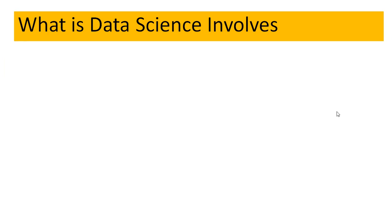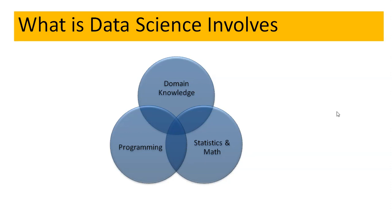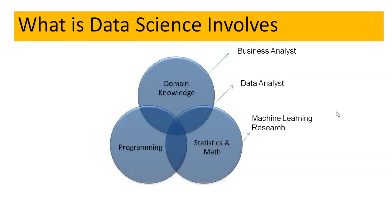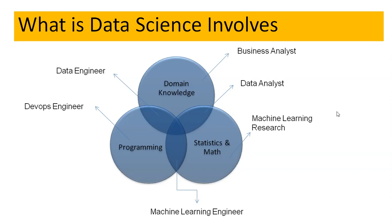Data science involves domain knowledge, statistics and math, and programming. The roles in data science include: business analyst, who has high domain knowledge, understands and collects requirements and documents them; data analyst, who has domain knowledge and skills in stats and math, performing data pre-processing, preparation, analysis using statistical methods, and visualization; those with strong stats and math are involved in ML research; ML engineer, who has stats, math, and programming skills; dev apps engineer with strong programming skills; and data engineer, who works on ETL, data warehouses, etc., with skills in databases, programming, and domain knowledge.